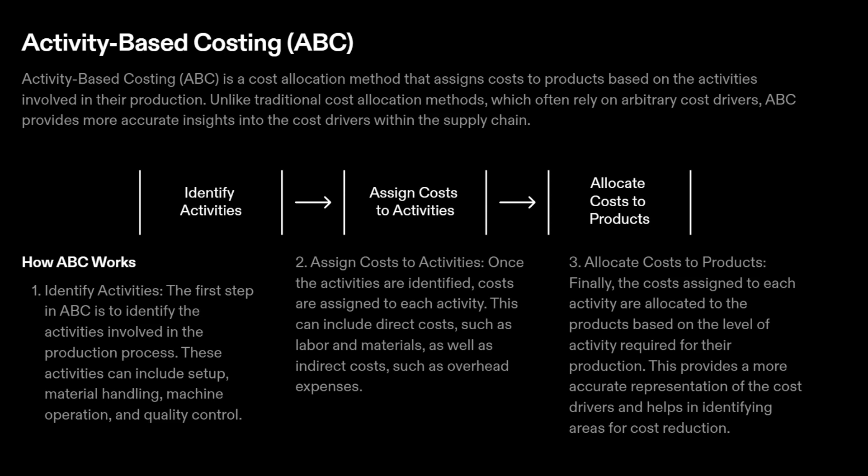How ABC Works. Step 1: Identify Activities. The first step in ABC is to identify the activities involved in the production process. These activities can include setup, material handling, machine operation, and quality control.